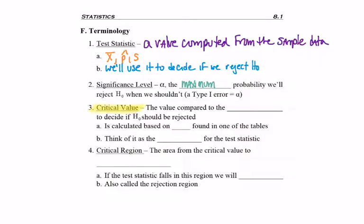So now we're ready to talk about the critical value, which is the value that's compared to the test statistic, so then we can decide whether we reject H0 or not. Its calculation is based on alpha — the significance level, which is the same alpha we were using with confidence intervals. Although we were told it's a 95% confidence interval and had to find that alpha was 5%, here you'd just be given that alpha is 5%. You can think of it as the cutoff point for the test statistic — if the test statistic exceeds it in some way, then we would reject H0.